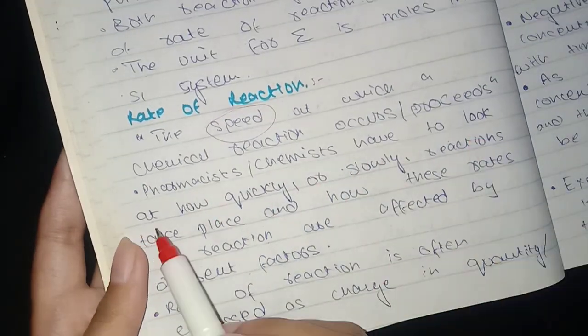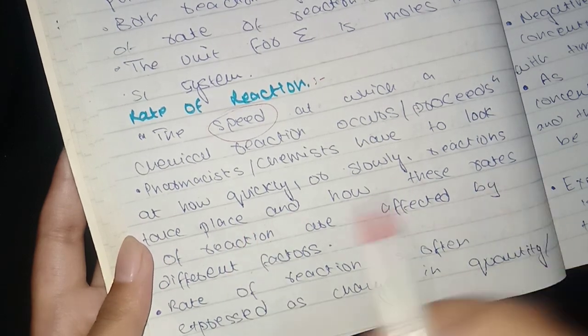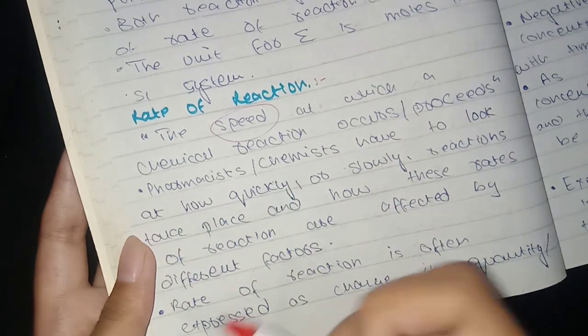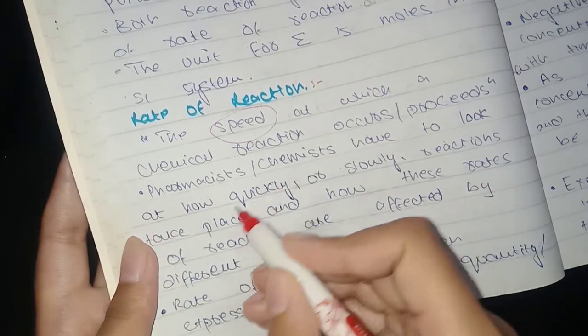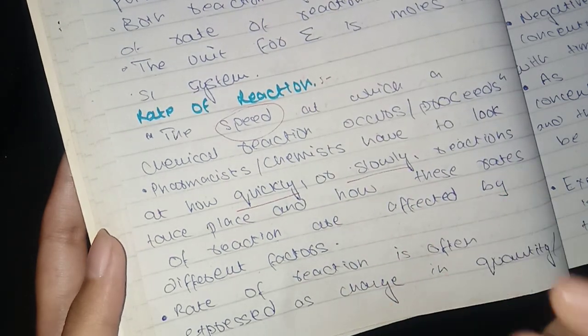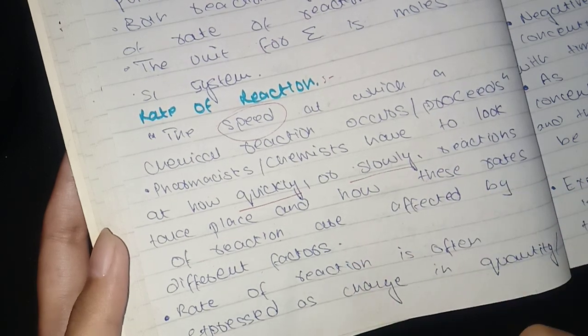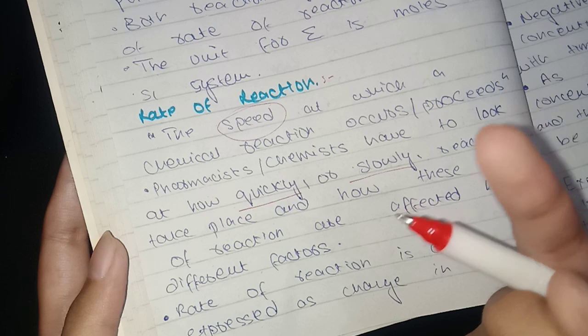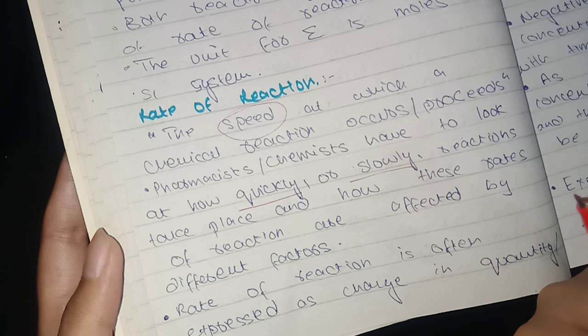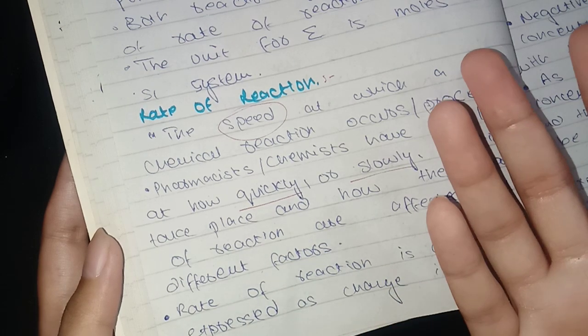Pharmacists and chemists have to look at how quickly or slowly the reaction takes place and how the rate of reaction is affected by different factors. Why is this important? We can predict how much time it takes to complete the process. If it is more time consuming, then we wouldn't go in favor of that.